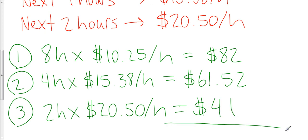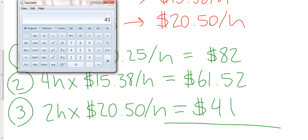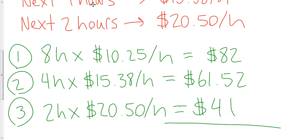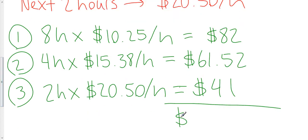So all we need to do is add all this up. And we're going to figure out how much John made on his 14-hour shift. So I have $82 plus $61.52 plus $41 for a grand total of $184.52.